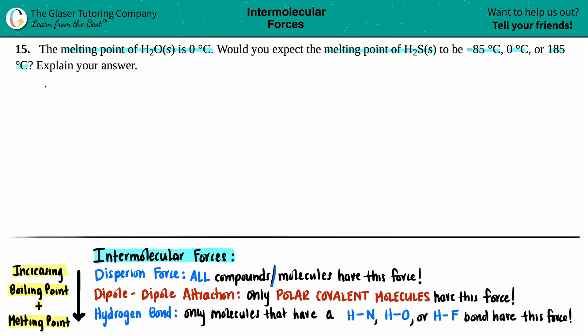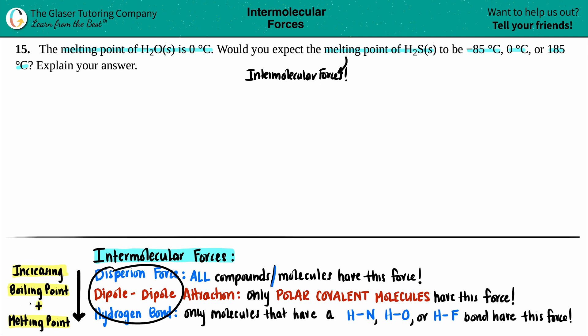Whenever they're talking about melting points and the difference between melting points — whether one molecule is going to be higher or lower — just know that melting points and boiling points are very closely related to the intermolecular forces that these molecules have. There are three total intermolecular forces that covalent molecules might have, and the more that you collect, the higher the boiling point and melting point.